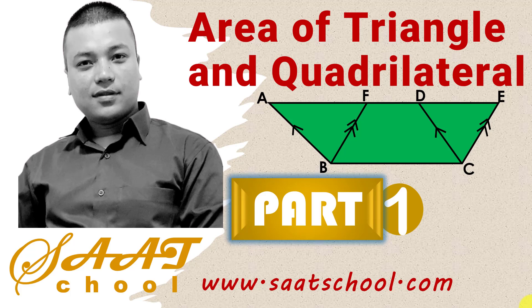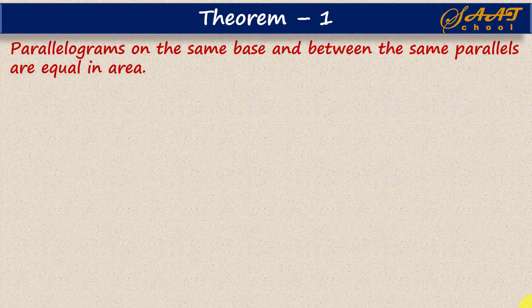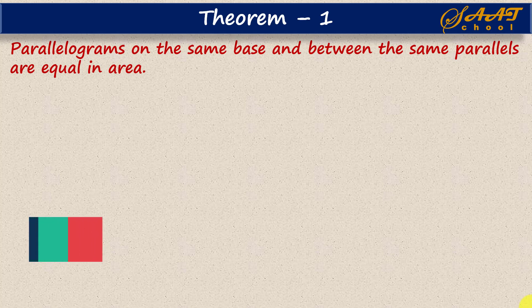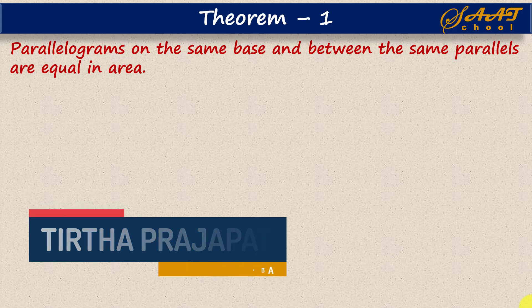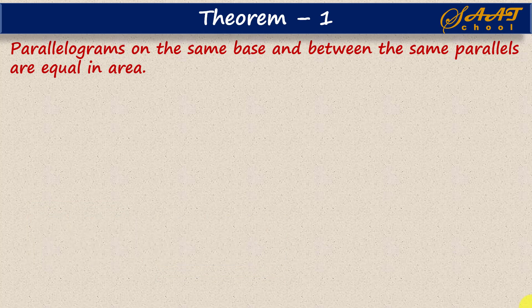Welcome to SATSchool. This is our first video on area of triangle and quadrilateral. We start here from Theorem 1: the statement is parallelograms on the same base and between the same parallels are equal in area. Meaning, if two parallelograms are standing on the same base and between the same parallel lines, then those parallelograms should be equal in area.